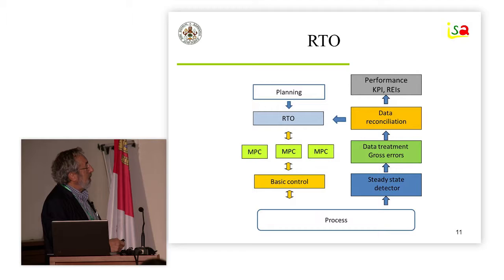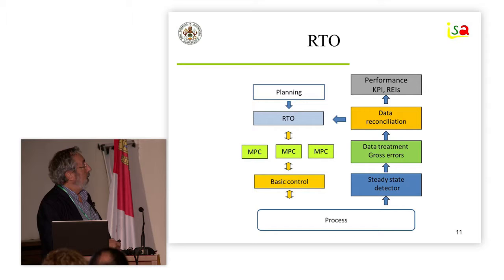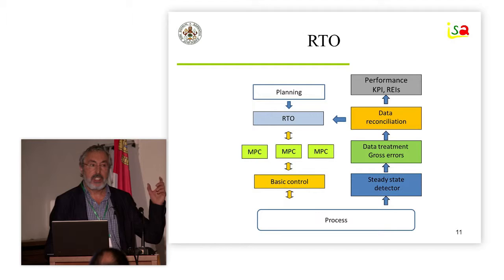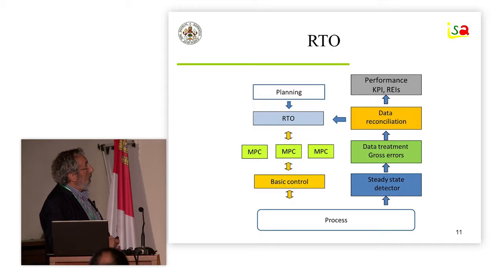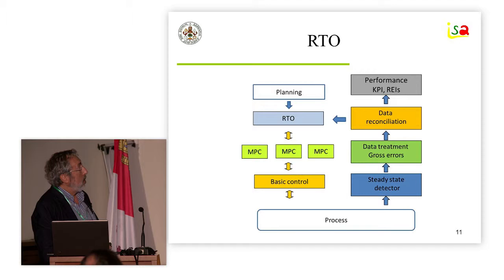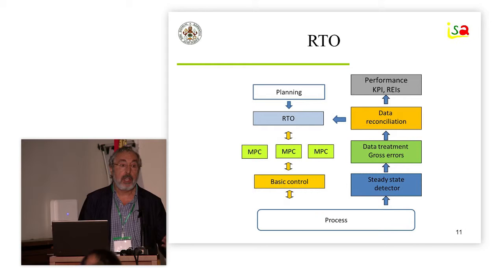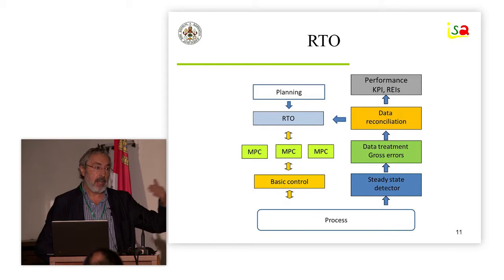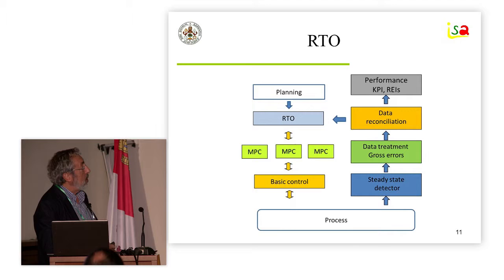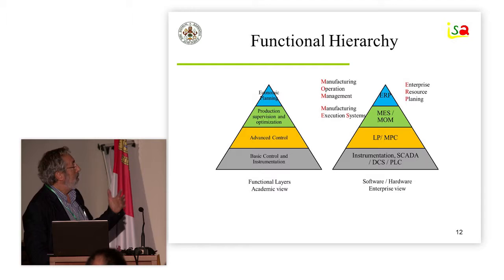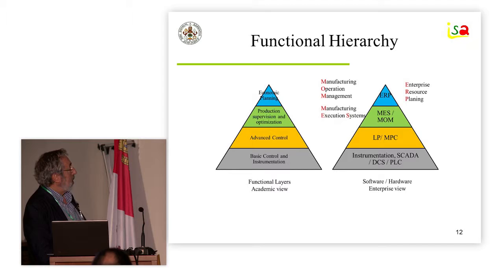In theory, RTO sets the set points of different MPCs for different parts, or directly goes to basic control. Your RTO depends on the planning level, and you interact a lot at this level. In order to know how well you are operating, you should compute some KPIs — key performance indicators — or resource efficiency indicators that give you an idea of how the plant is going. The purpose of the RTO is to maintain good values in these global indicators of the plant. This fits more or less into the typical pyramid of control structure.